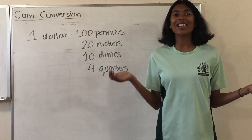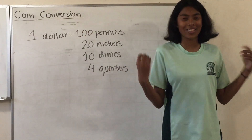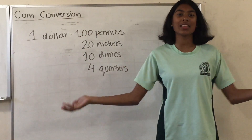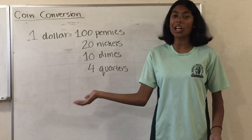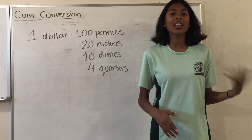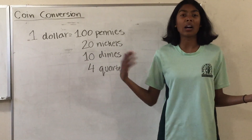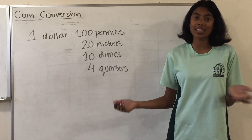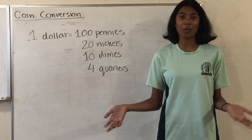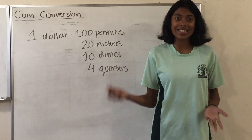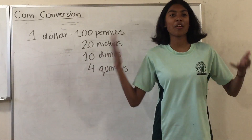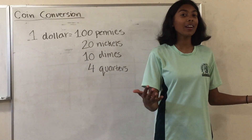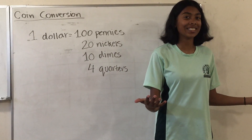So now let's move on to coin conversion. The main thing we're going to convert today is a dollar. A dollar can equal a hundred pennies, twenty nickels, ten dimes, or four quarters.